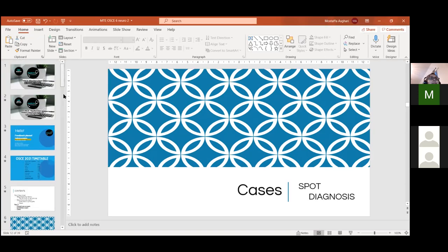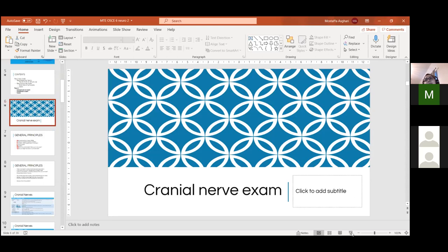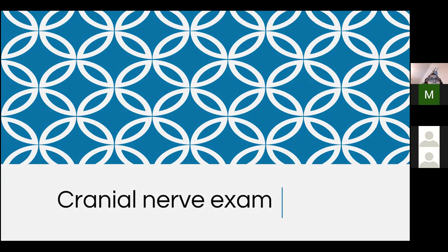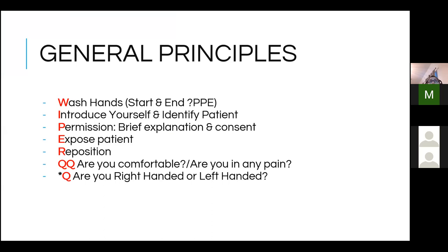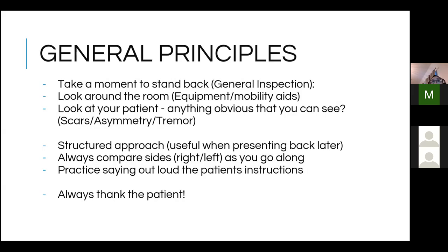So general principles: as with all neuro exams, wash your hands, introduce yourself, identify the patient, ask for permission, expose and reposition the patient, ask if they're comfortable and in pain. Some neurologists like you to ask if they're right- or left-handed. Take a moment to stand back, do a general inspection, look around the room for equipment and mobility aids - walking stick, wheelchair - and look at the patient for anything obvious: scars, asymmetry, tremor, neurofibromas, café-au-lait spots.